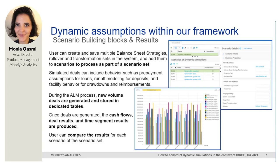The idea of showing the ALM process and the scenario is because ultimately we run an ALM process to have new volume deals generated during this process according to assumptions that we have defined. Once those deals are generated, cash flows and analytics are generated so that you can derive reporting, analytics, results, gap analysis, NII — just like I was showing in that graph — so that you can compare the impact of your assumptions on any analytic.